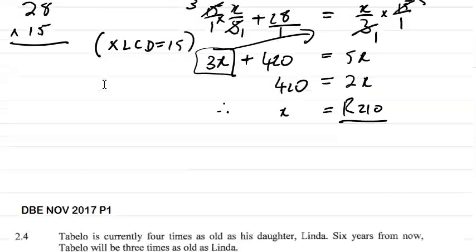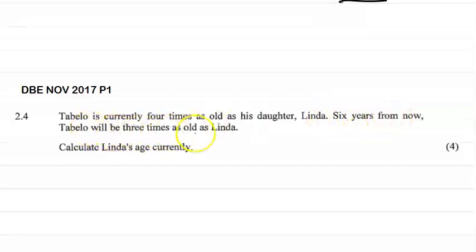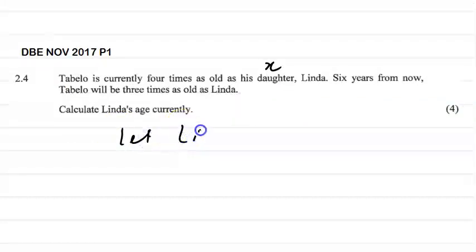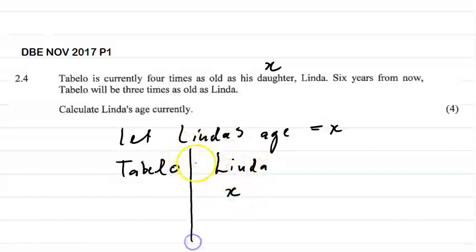Let's look at another question. This one is from the DBE November 2017 Paper One. It says: Tabelo is currently four times as old as his daughter Linda. Six years from now, Tabelo will be three times as old as Linda. Calculate Linda's current age. In an age problem like this, you want to let the smaller person's age equal to x. So we let Linda's age equal to x, and Tabelo's current age is therefore 4x.